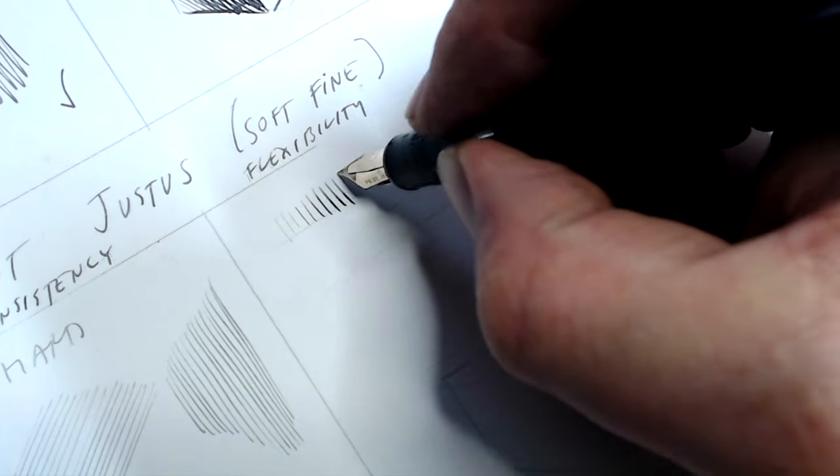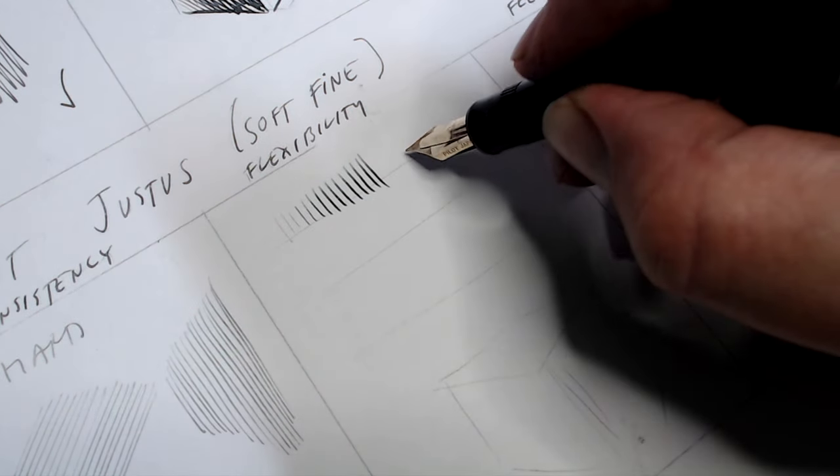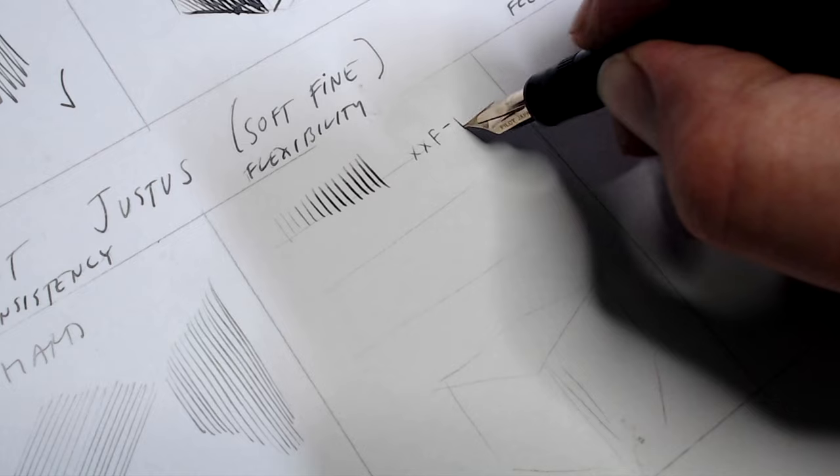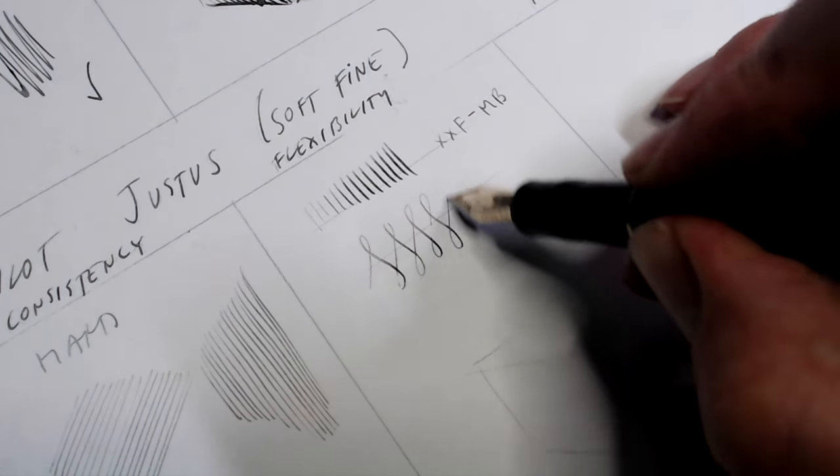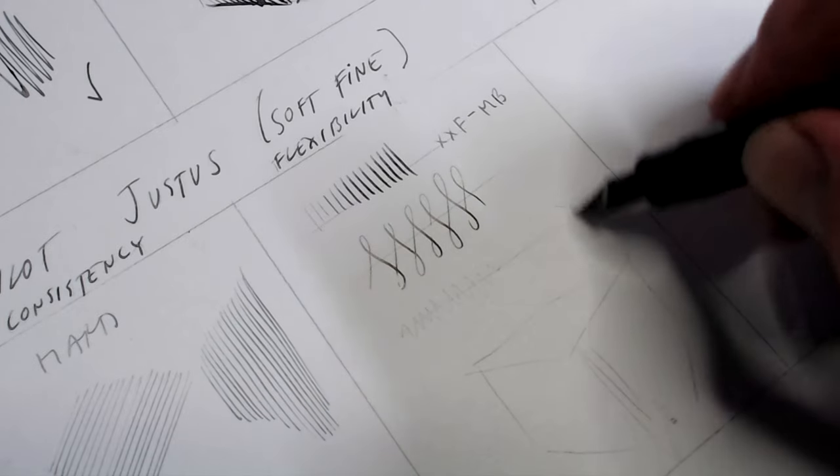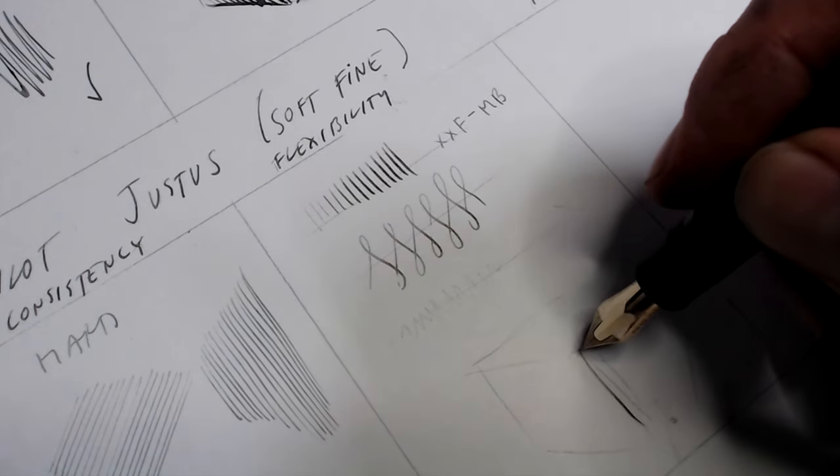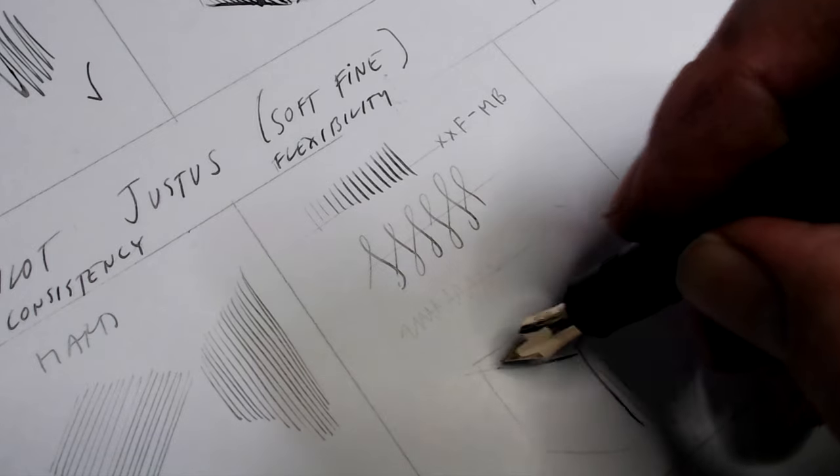In the flexibility test, this pen starts with an extra extra fine line and flexes slightly better than either the Custom 74 or the Falcon. Given how fine the line starts, that's an impressive amount of flex. In reverse writing, it barely puts down a line at all, but is still usable.